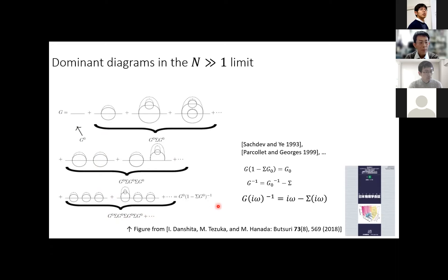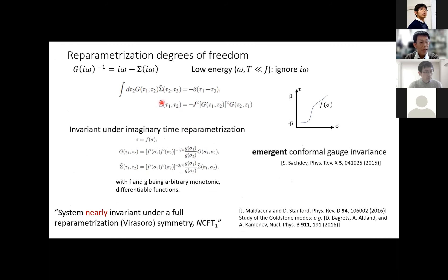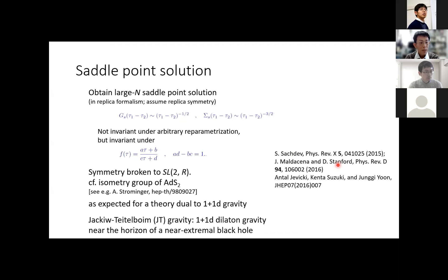In the low energy limit, i-omega can be ignored compared to other terms, so we obtain an equation invariant under reparameterization in imaginary time. This invariance is emergent, occurring in the low energy limit after averaging over random parameters. We can obtain the large-N saddle point solution; the breakdown of this symmetry is analogous to expected behavior for theories related to 1+1 dimensional gravity — more specifically, JT gravity, which is dilaton gravity near the horizon of a near-extremal black hole.